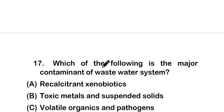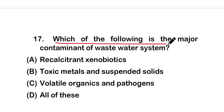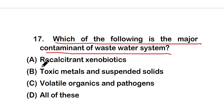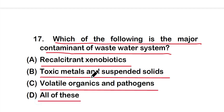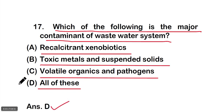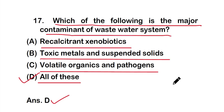Question seventeen: which of the following is a major contaminant of wastewater systems? Options: recalcitrant xenobiotics, toxic metals and suspended solids, volatile organics and pathogens, or all of these. The right answer is option D — all of these. Recalcitrant xenobiotics, toxic metals, suspended solids, volatile organics, and pathogens are all involved in wastewater contamination.